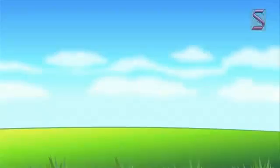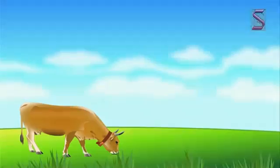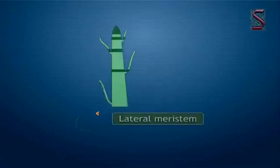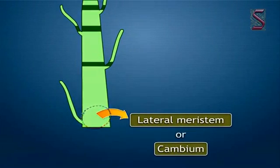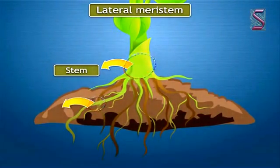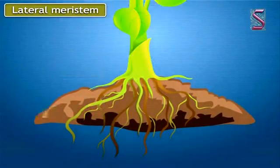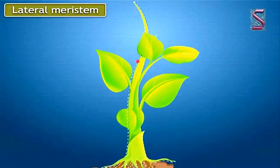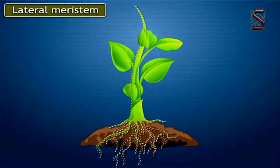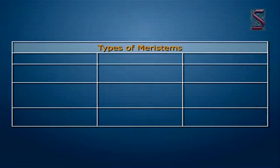Intercalary meristem helps to increase the length of the internodes. They occur in grasses and regenerate parts removed by the grazing herbivores. Lateral meristem, or cambium, such tissues are present at the radial portion of the stem or root. Secondary growth — or the growth in thickness of a plant — occurs because of the lateral meristem tissues.